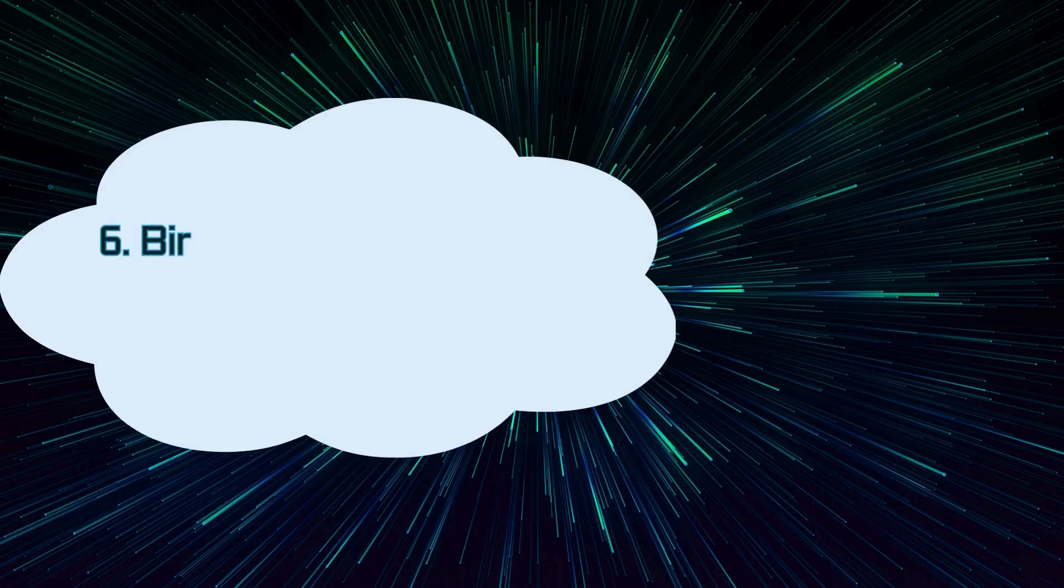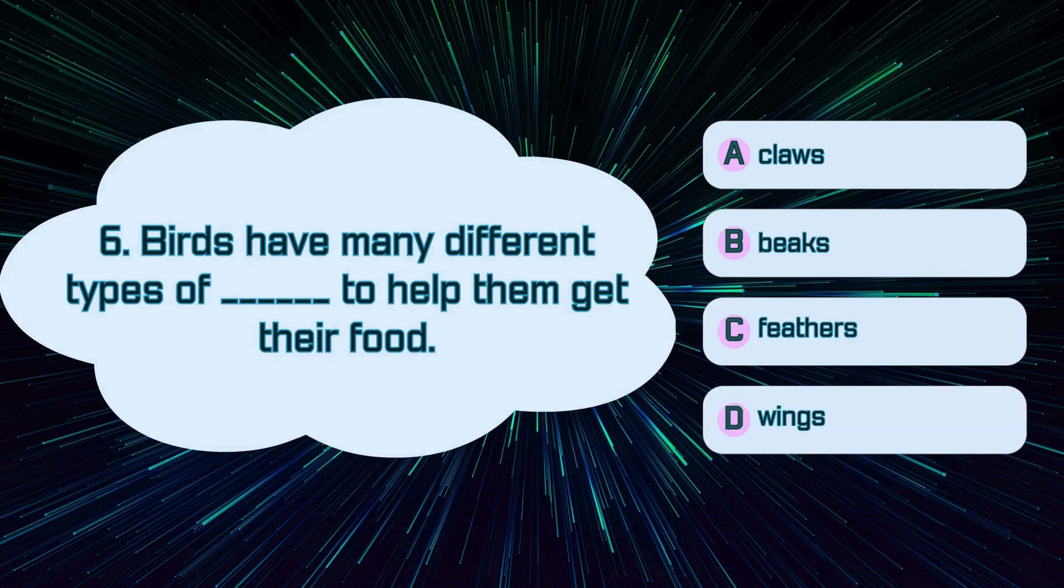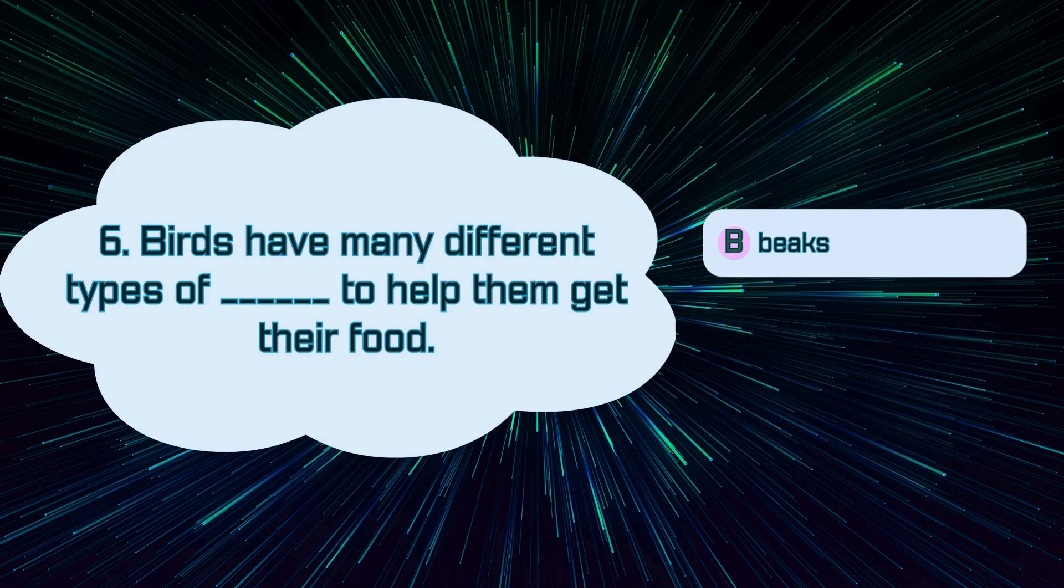Number 6. Birds have many different types of blank to help them get their food. A. Claws, B. Beaks, C. Feathers, D. Wings. The correct answer is B. Beaks.